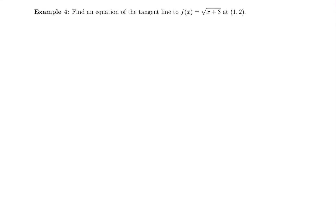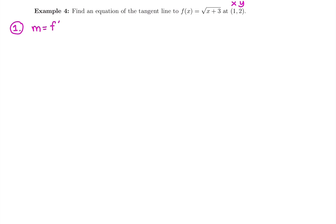In this video, we're going to find the equation of a tangent line for the function the square root of x plus 3 at the point (1, 2). I'm going to label this as my x and y of the points. We have three steps to find the equation of a tangent line, and our first step is going to be to find m, which means taking the derivative and plugging in the x value of the point we're given, so f prime of 1 in this case.